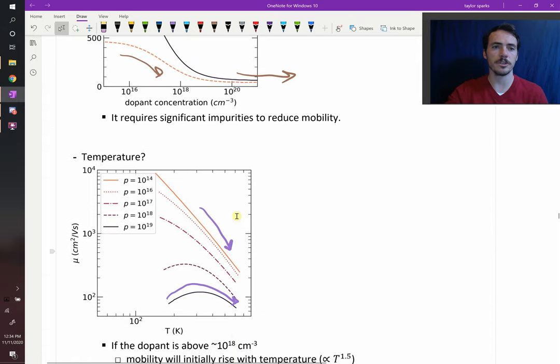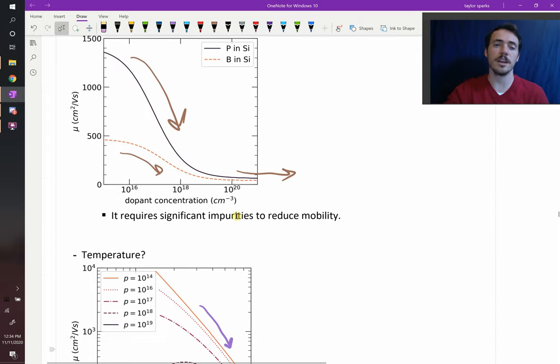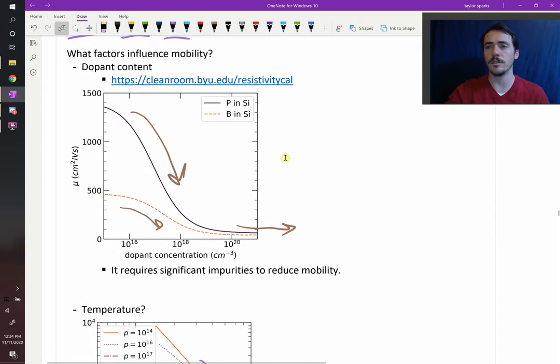And we've already talked about temperature dependence. So that is how temperature dependence and impurities will change the conductivity of semiconductors, both intrinsic and extrinsic.